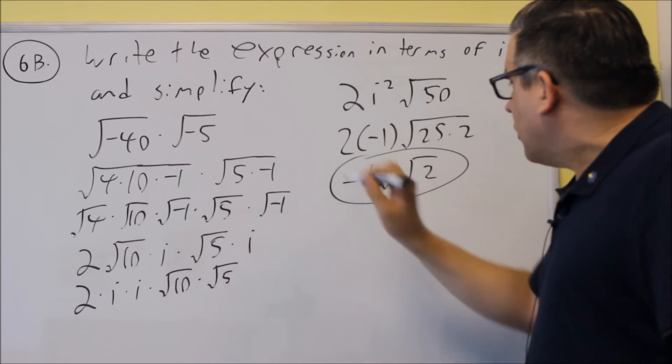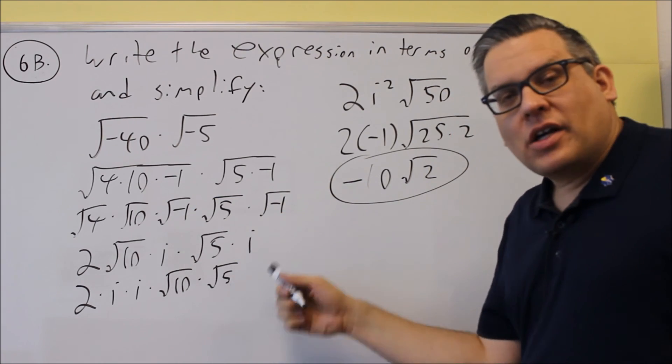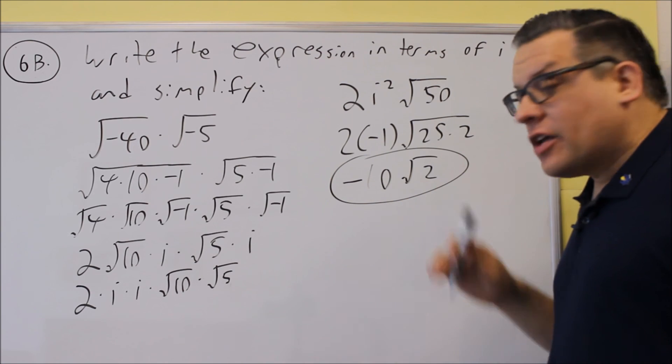So again, we wrote the expression in terms of i, we did that, and as a result, when we simplified all of it, we got negative 10 root 2.